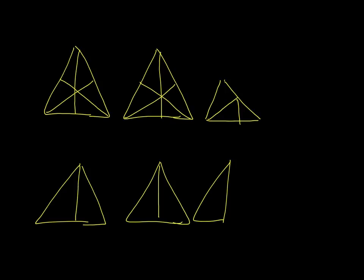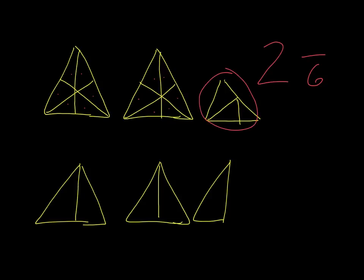Here we have a set of triangles. We've got 1, 2 complete triangles and then a bit, so we can immediately write our whole number as 2. To get the denominator, we count the pieces in a complete triangle: 1, 2, 3, 4, 5, 6 — so the denominator is 6. Looking at the partial triangle, we have 1, 2, 3 pieces, so the numerator is 3. That can be reduced — our final answer is 2 and 1 half, because 3 is half of 6.